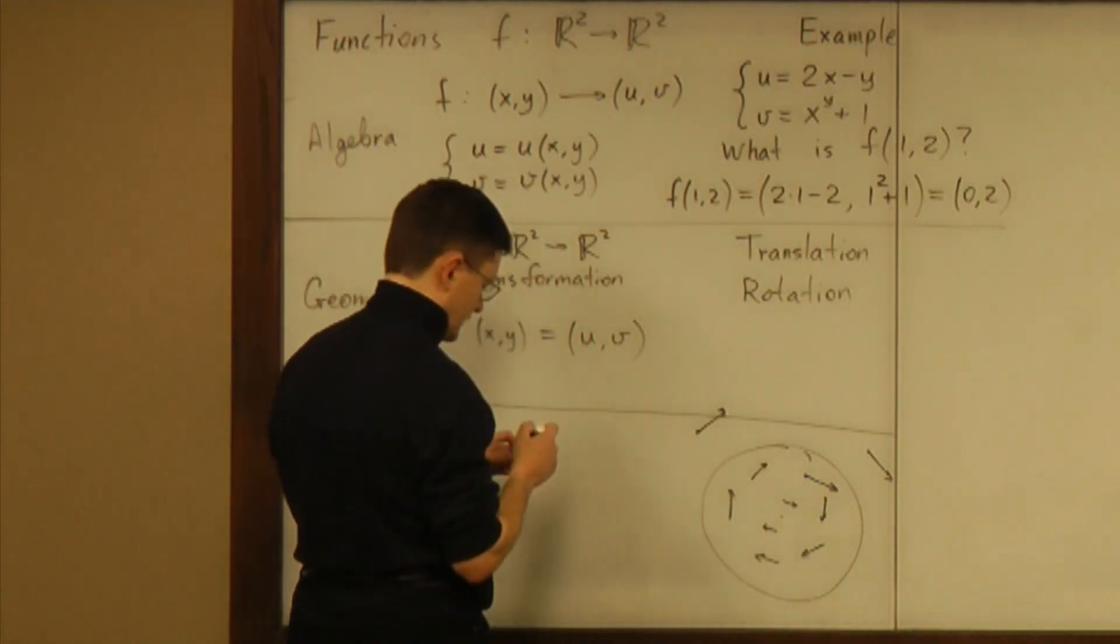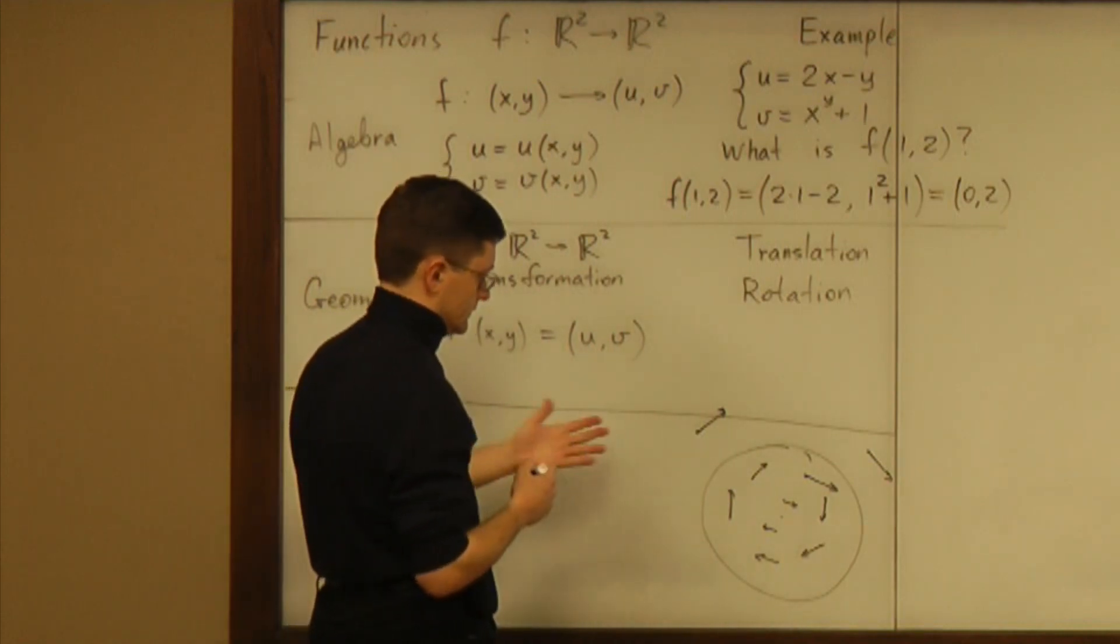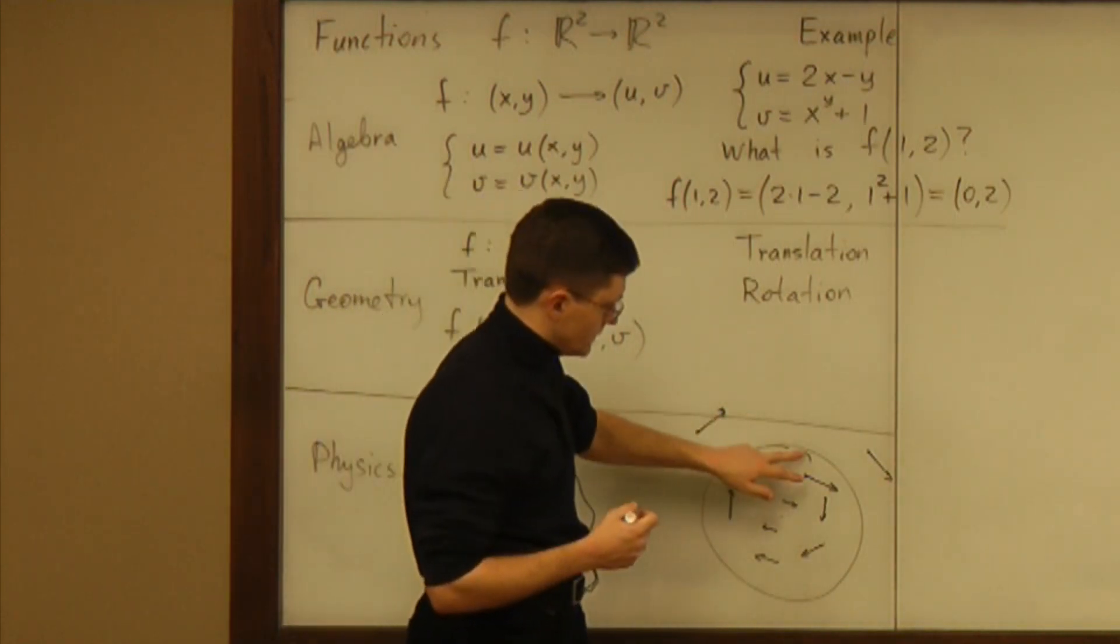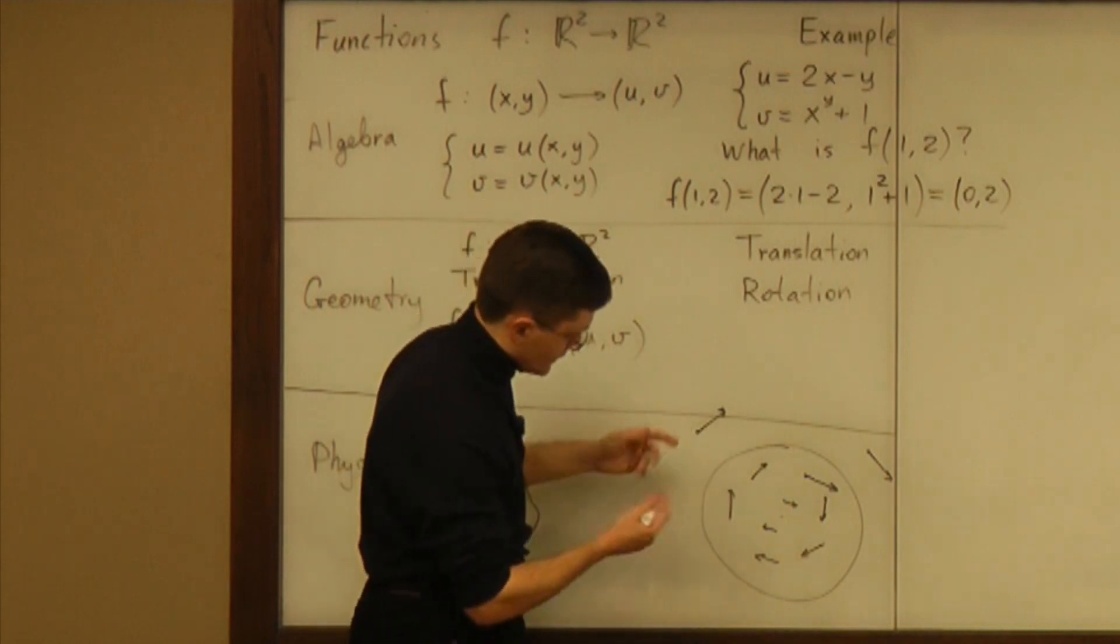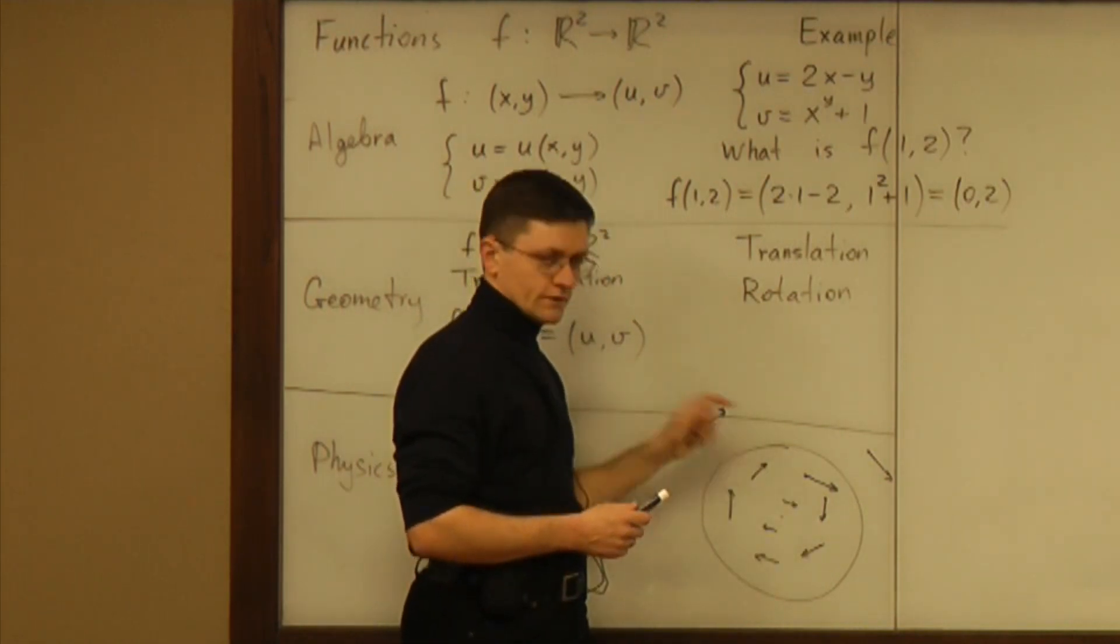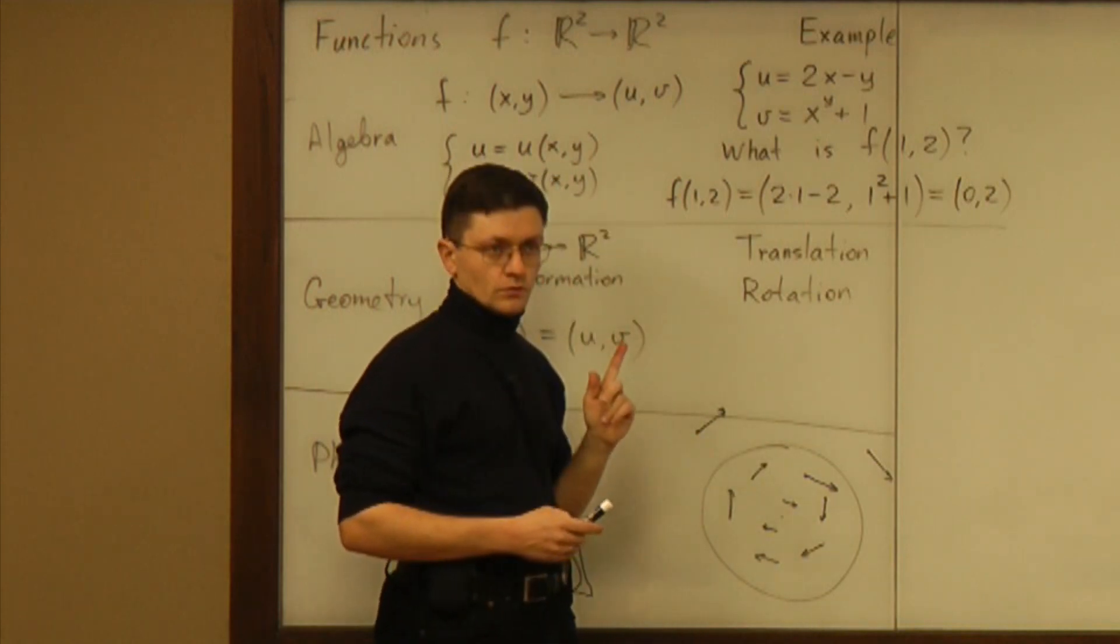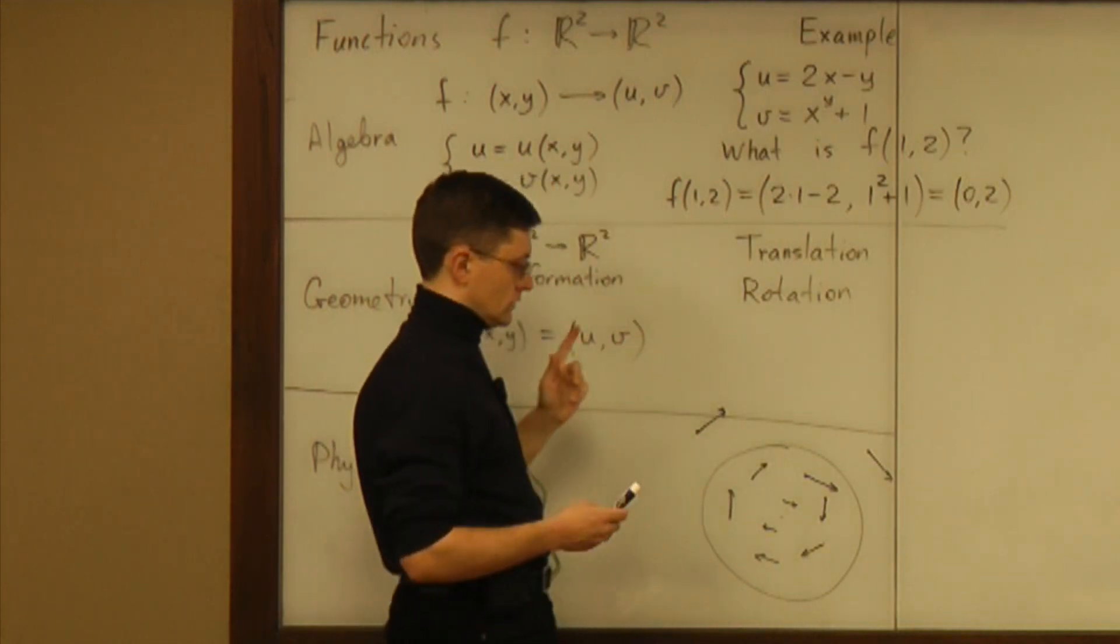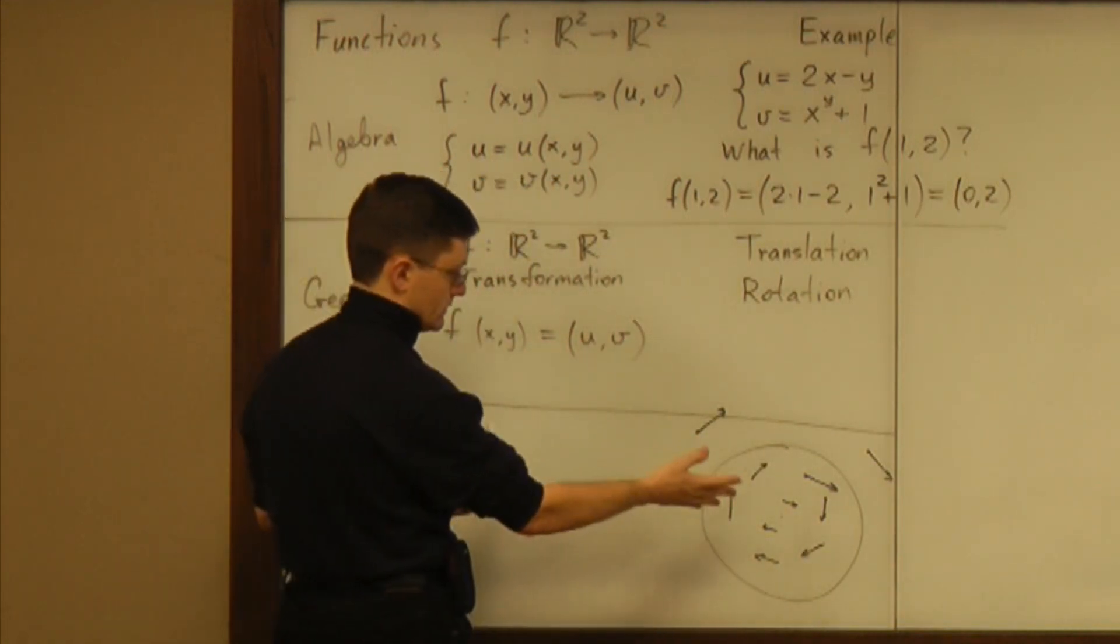So this is a way to think about the physics approach, but assigning a vector to every point on a plane doesn't even sound like a function from a plane to a plane. So how do we even think about this as a function from a plane?